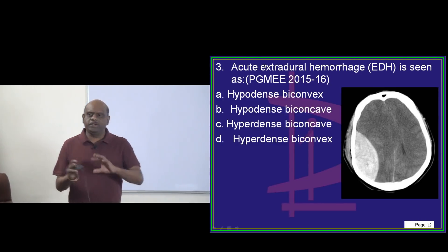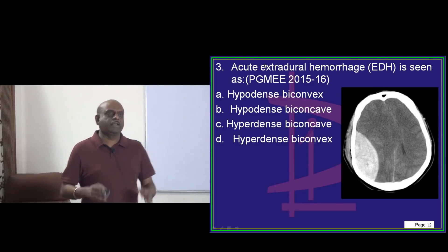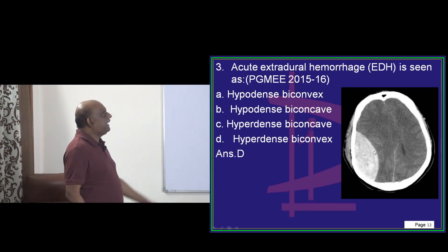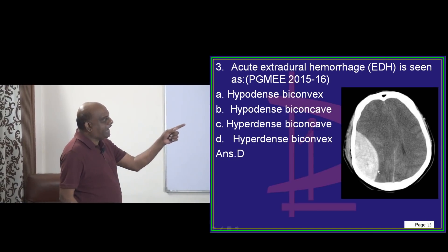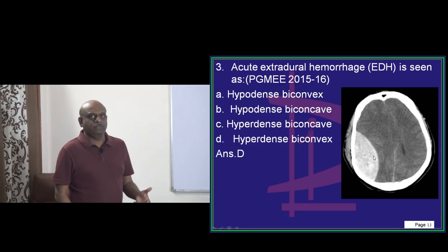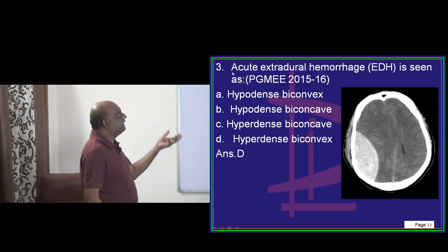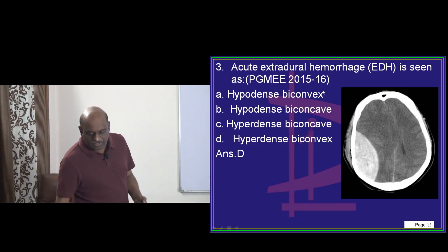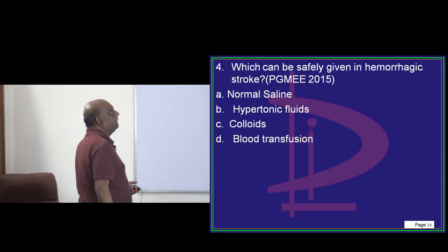Acute extradural hematoma — how does it clinically present? Typically, it will be biconvex and it will be hyperdense. Any blood will be hyperdense. That is the presentation of extradural hemorrhage that you need to remember.